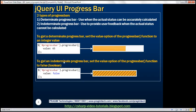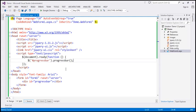To get an indeterminate progress bar, set the value option to false. So the value option of the progressbar function supports two different data types: integer and Boolean. Let's look at these two in action.